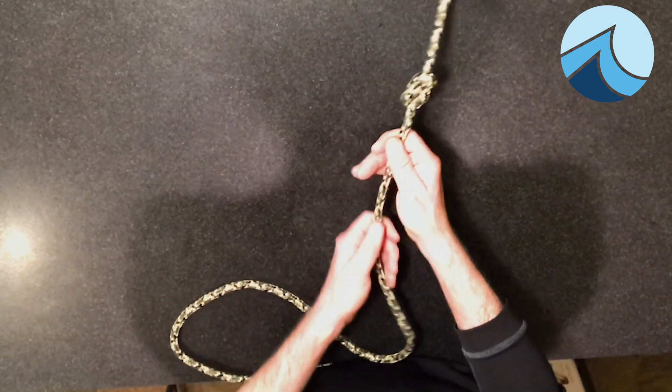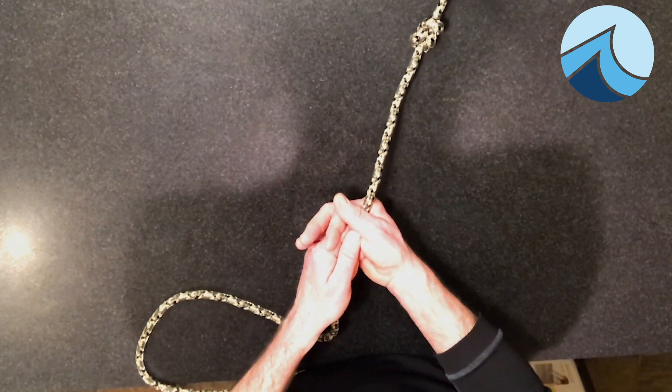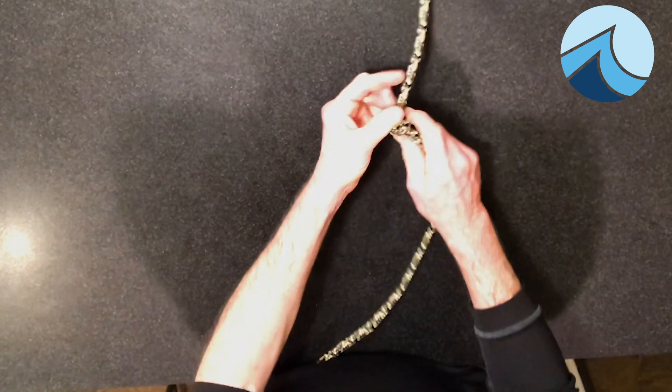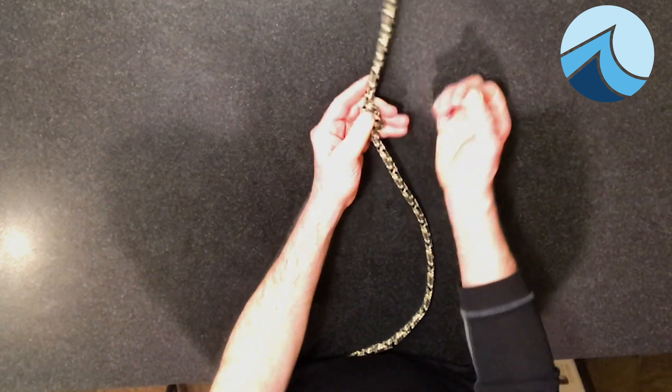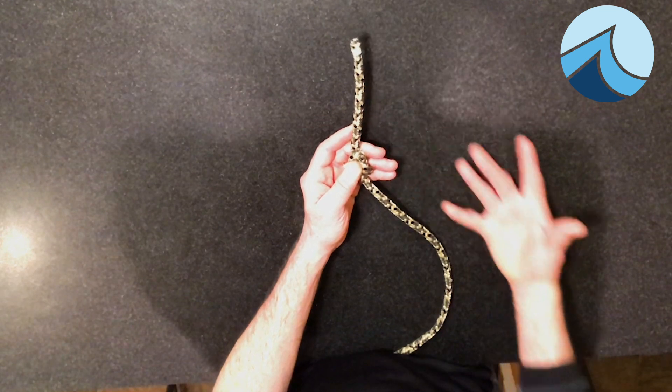Remember, this knot was also called a stopper knot because it's designed to stop a line from going through a hole. It's also a stopper knot because lines tend to fray at the end of them, and that's no good for the line. Eventually it just unravels.